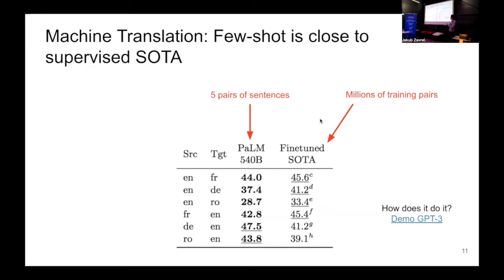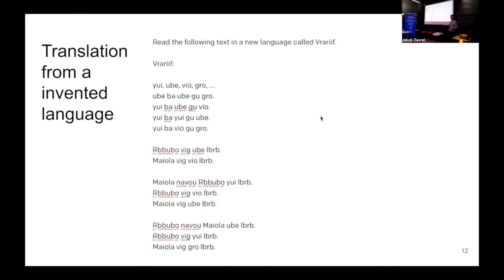Large language models have this amazing property that they can do few-shot tasks even if they weren't trained for them, and they are now at the level of beating supervised machine translation models. State-of-the-art machine translation models were trained on millions of pairs of examples, but the latest version of PaLM can reach the same level of translation quality using only five pairs of sentences as input — no parameter update — and it still reaches state of the art.